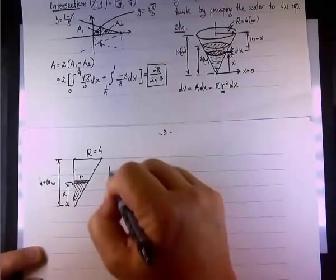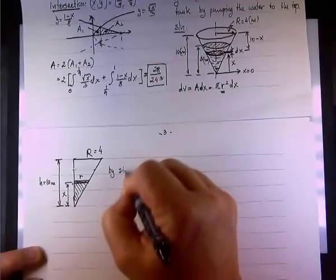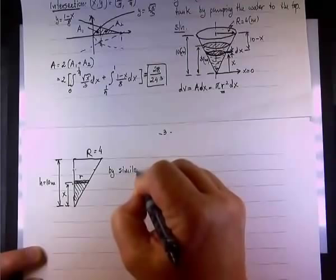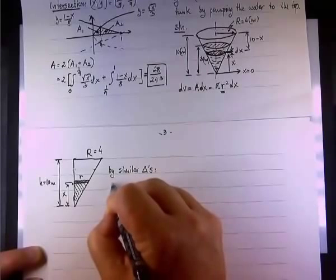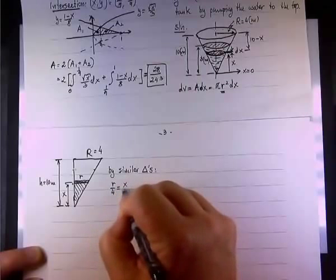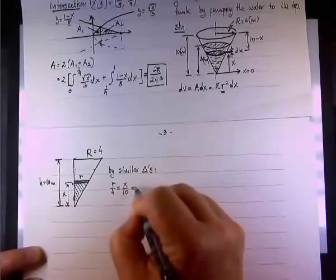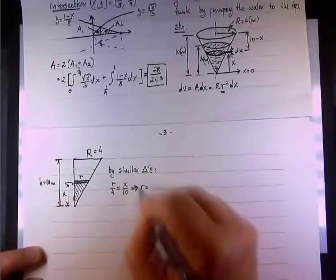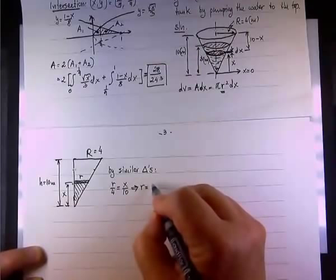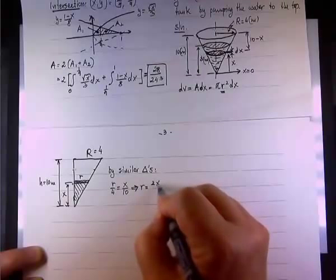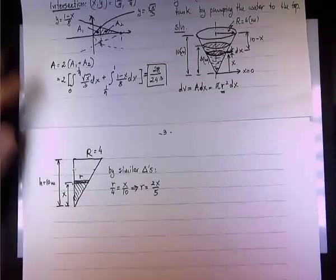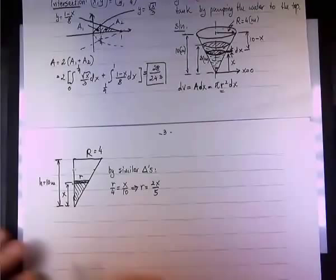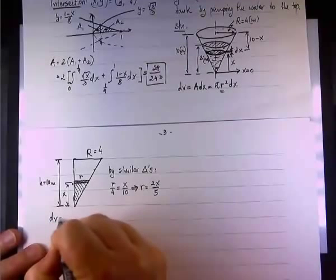Okay? Now, by similar triangle, the ratio r to 4 equals the ratio x to 10. Okay? So by similar triangles, we get r to 4 equals x divided by 10, or r by itself will be 4x over 10, or 2x over 5, or 2x over 5. Okay?